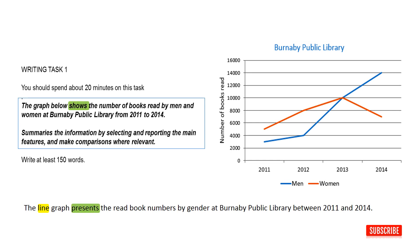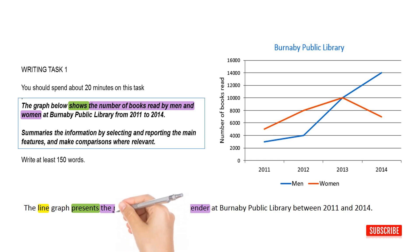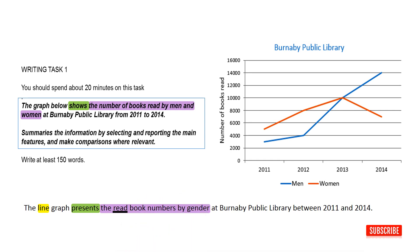Next, I used 'presents' instead of 'shows.' To describe the number of books read by men and women, I gave the phrase 'the read book numbers by gender.' Here, the word 'read' is used as an adjective, not as a verb. And finally, I changed the phrase 'from 2011 to 2014' into 'between 2011 and 2014.'